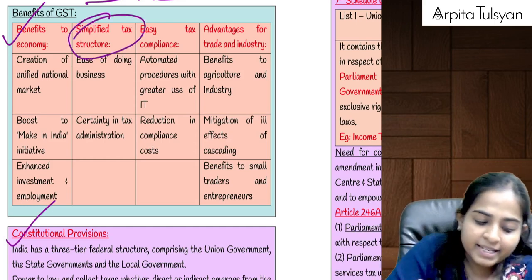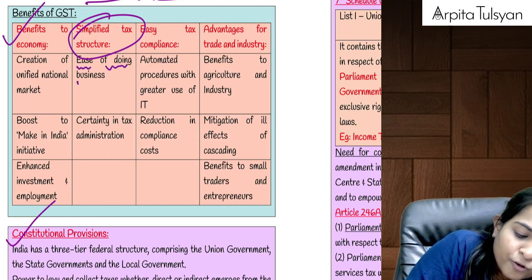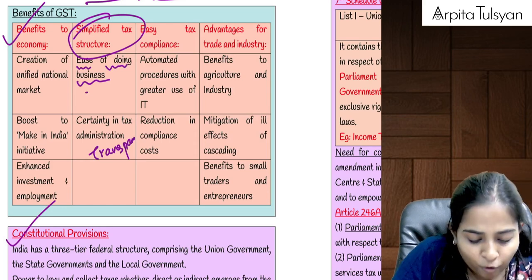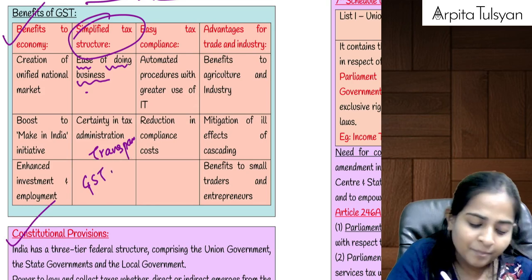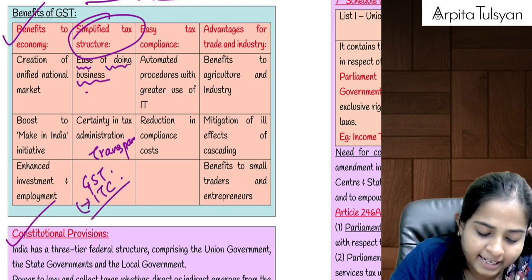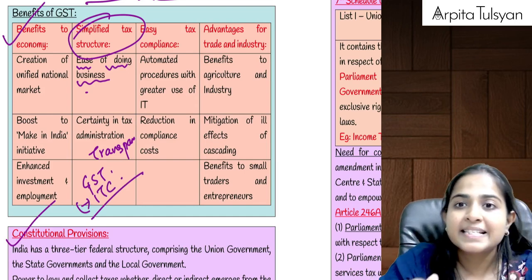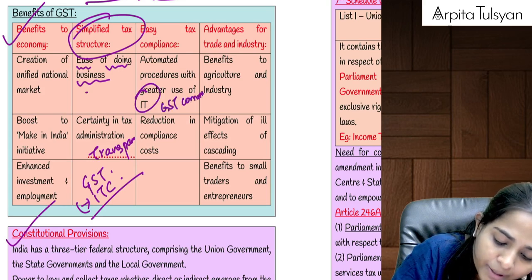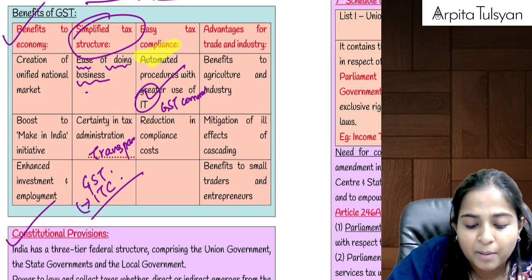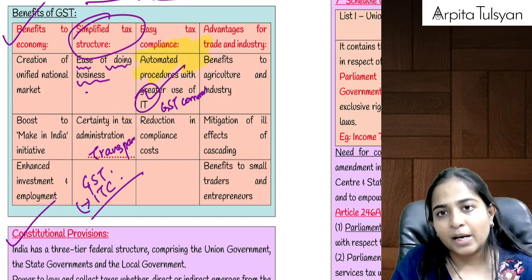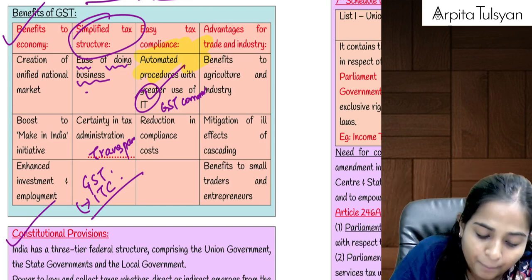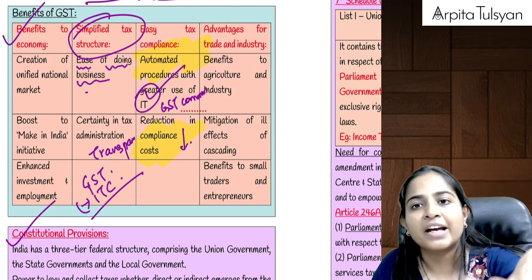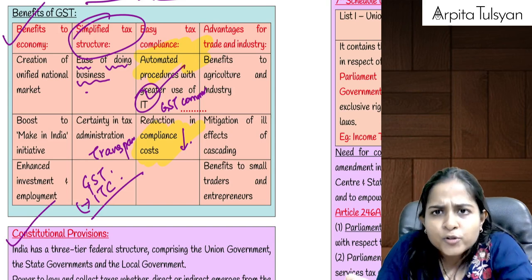Because of this particular structure, there is ease of doing business because everything has become transparent. Whatever amount is payable and whatever input tax credit is available — both are shown on the portal, making it simple. Because of the common GST portal and use of information technology, most things have become automated. So it has become simple from the taxpayer point of view, and because of that, the compliance cost has gone down — the work which was earlier done by five employees can now be done by two employees only.